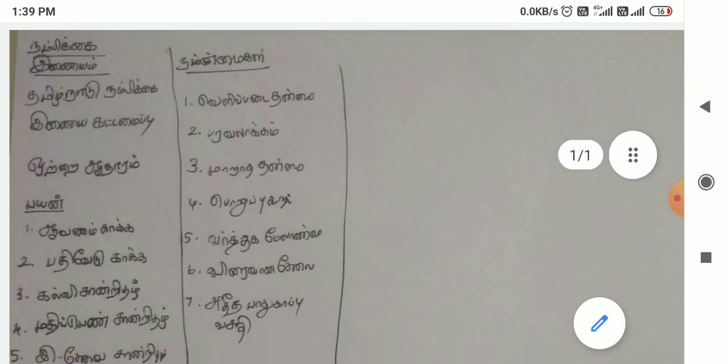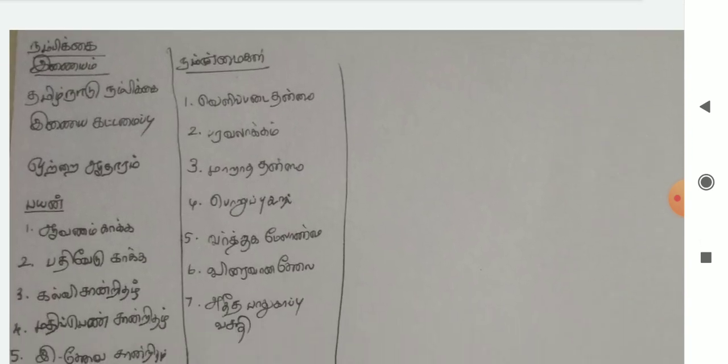First, we'll talk about Nambi Kainayam. This is Nambi Kainayam — Tamil Nadu Nambi Kainayam. That's why this is a blockchain. This is Tamil Nadu.